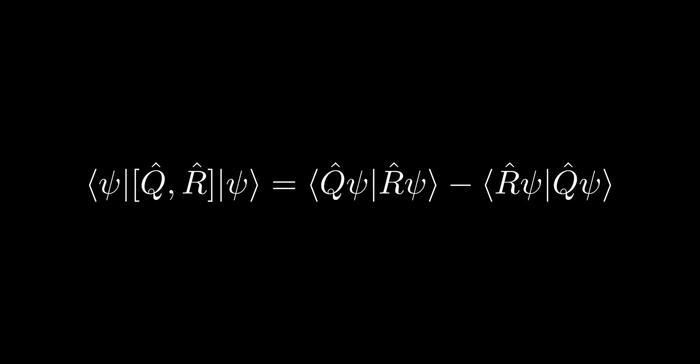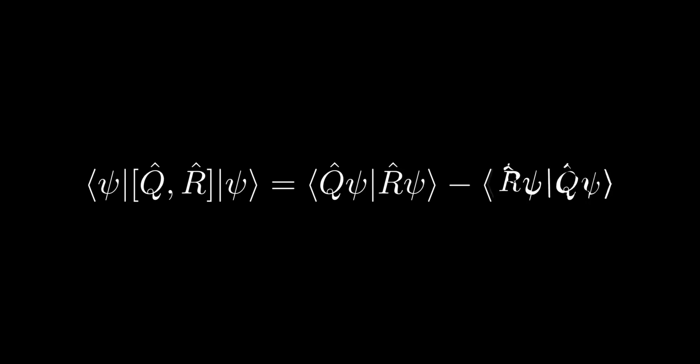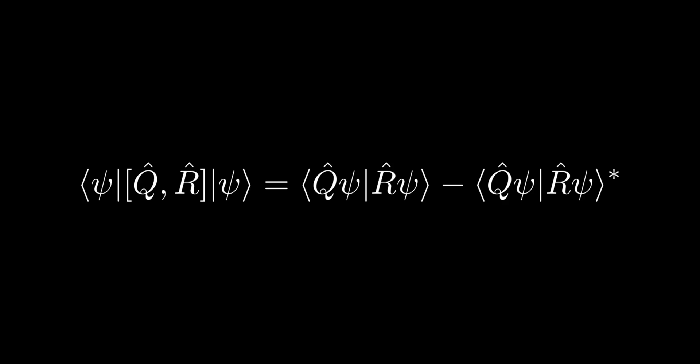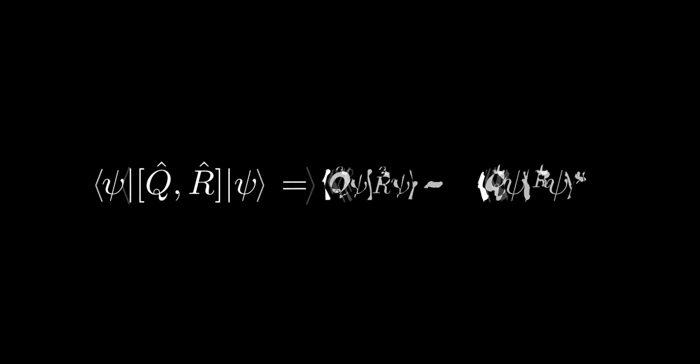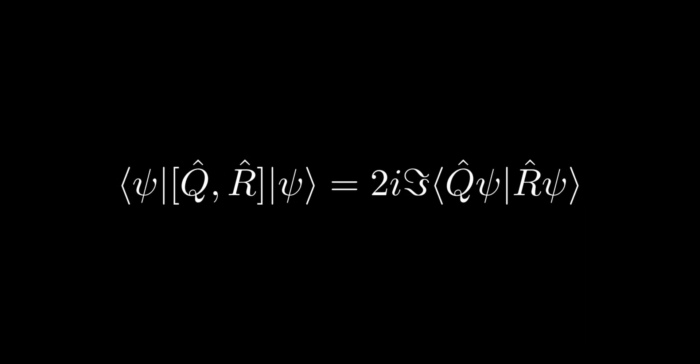Then we swap left and right side of the second inner product and take the complex conjugate. And finally we note that the difference of a complex number with its complex conjugate is 2 times imaginary unit times the imaginary part of the complex number.